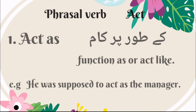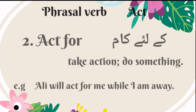The first phrasal verb is 'act as.' Its meaning is function as or act like. The sentence would be: he was supposed to act as the manager. The second phrasal verb of act is 'act for.' Its meaning is take action or do something — Urdu mein is ka matlab hai ke liye kaam karna. The sentence would be: Ali will act for me while I am away.